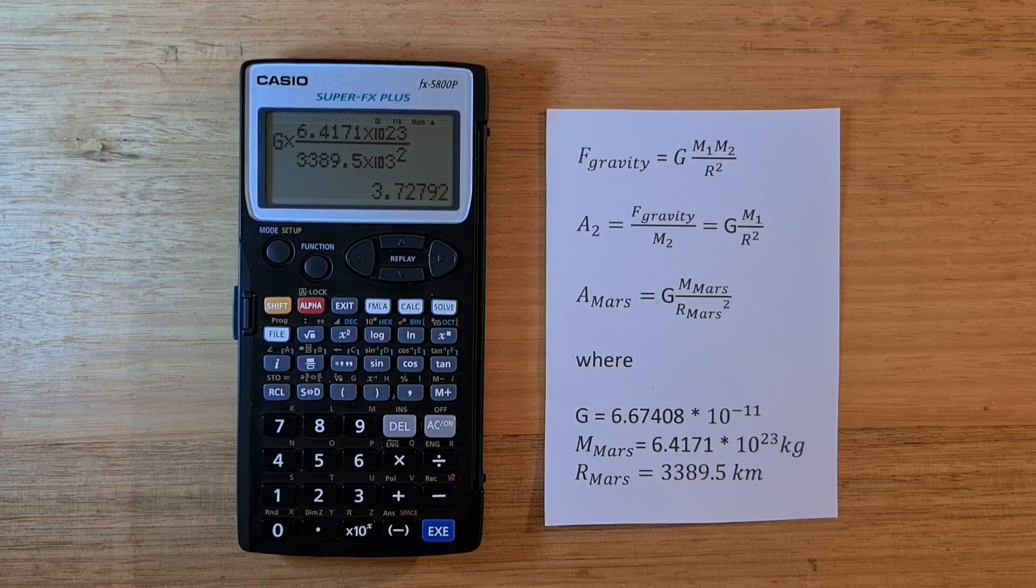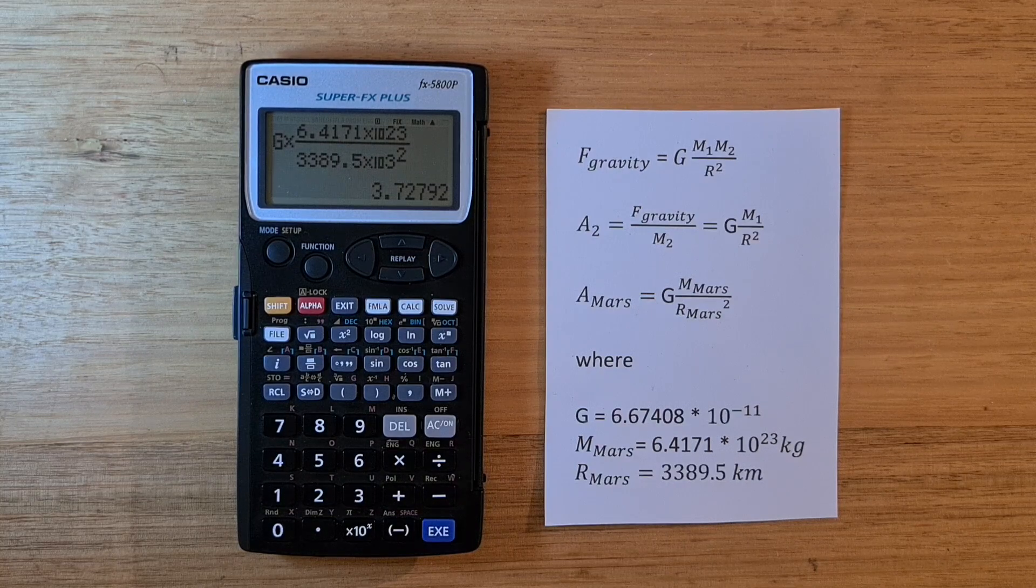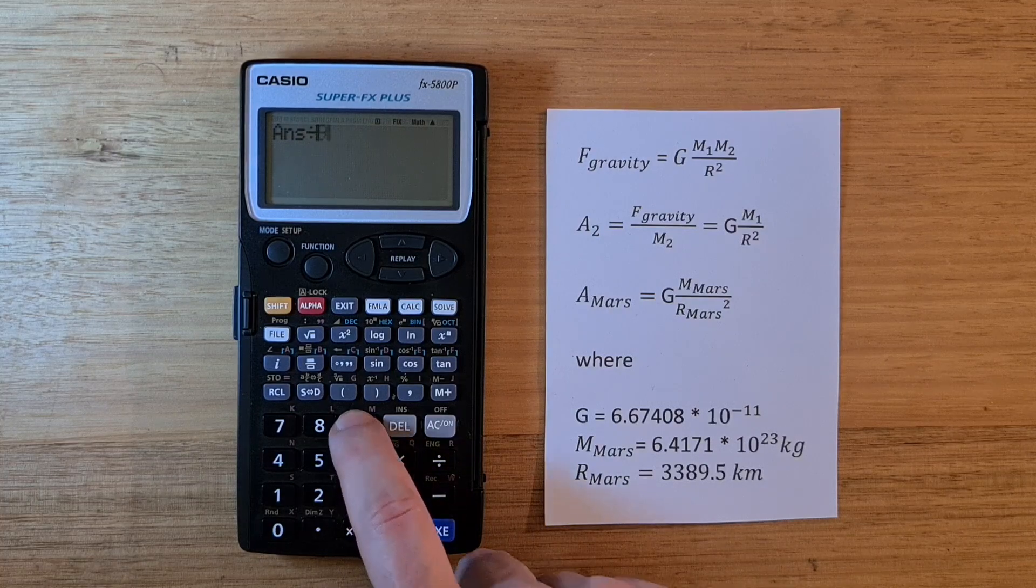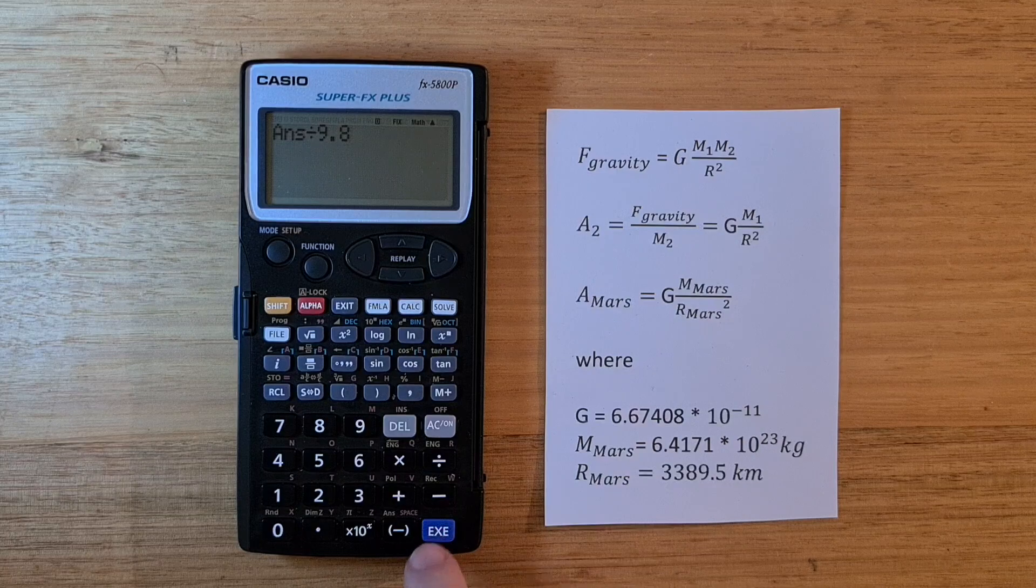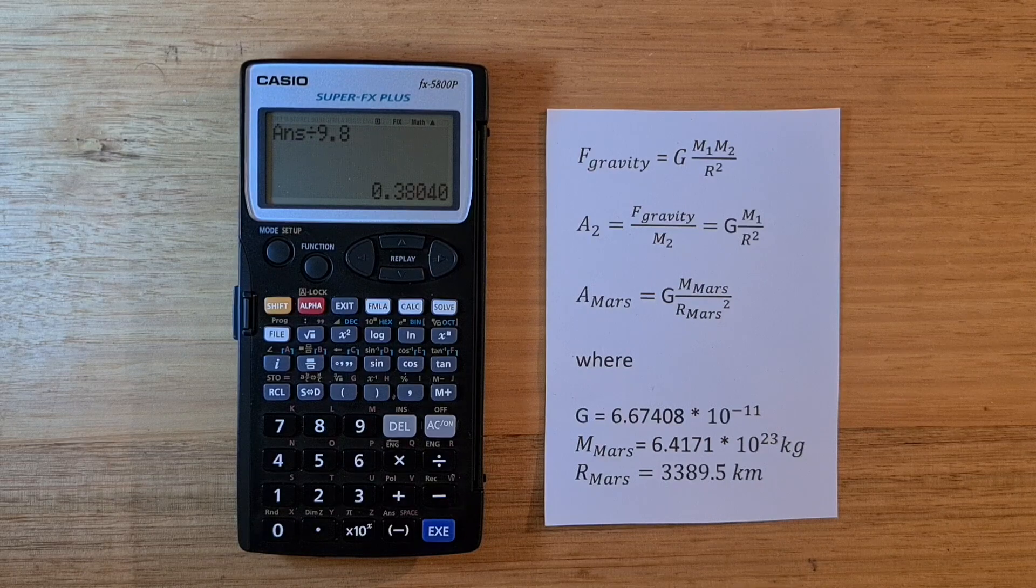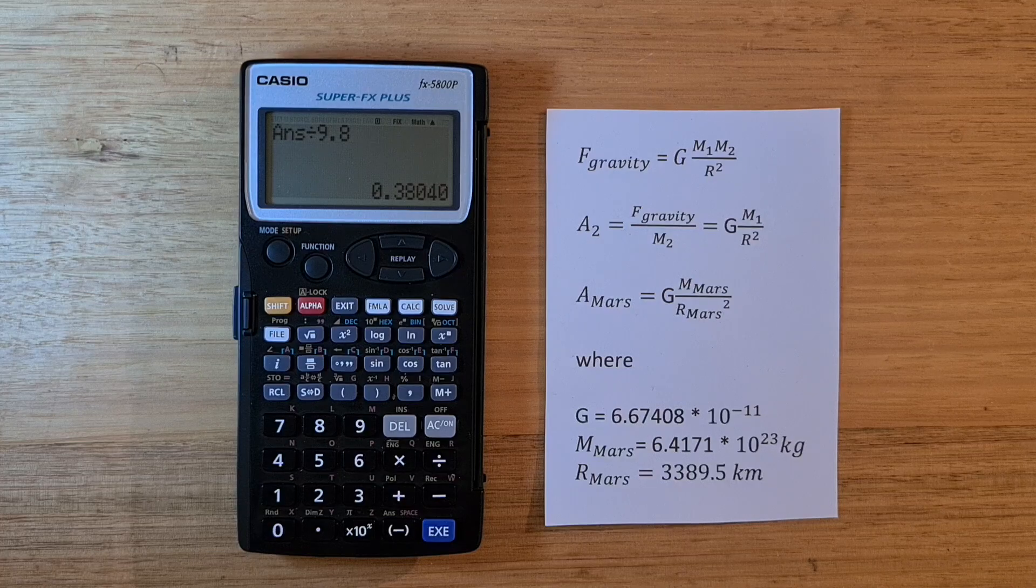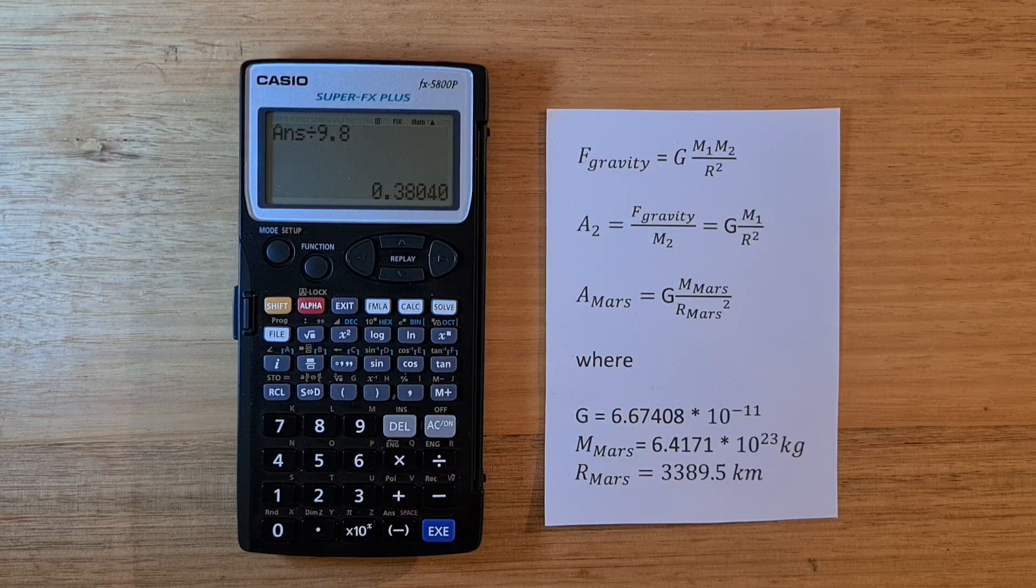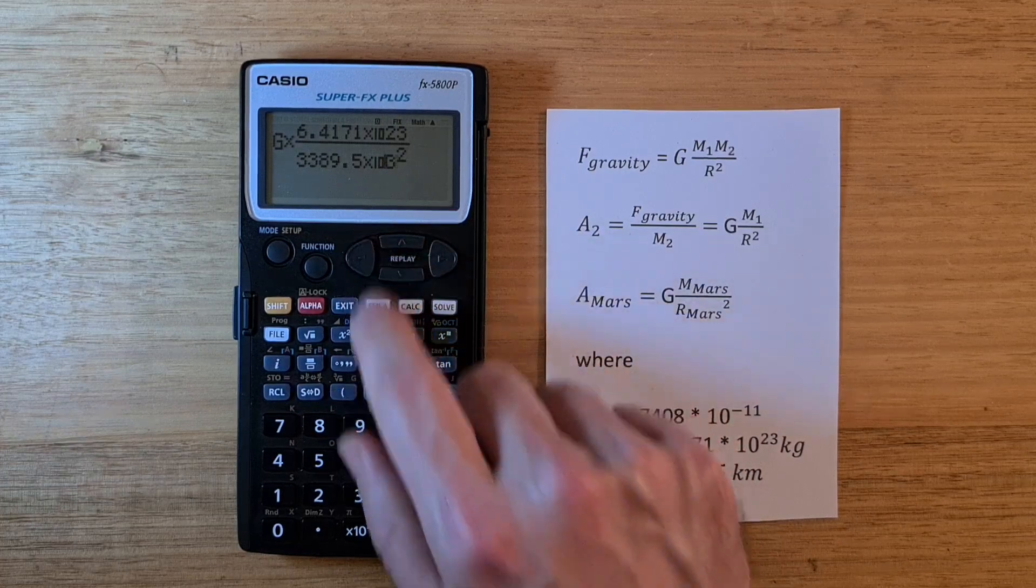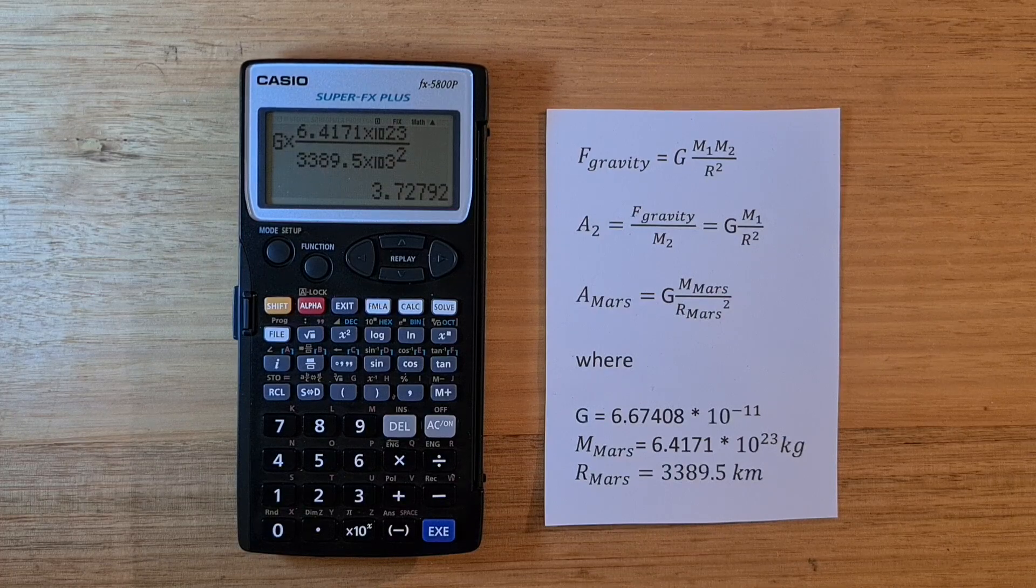And so say now, if we wanted to know what fraction of the Earth's gravity that is, we can just hit divide and then 9.8 meters per second squared, which is the acceleration on the surface of the Earth. So it's about 0.38 times the force of gravity. And you can use the cursor keys to go back and edit the equations. And it's all pretty quite easy to use.